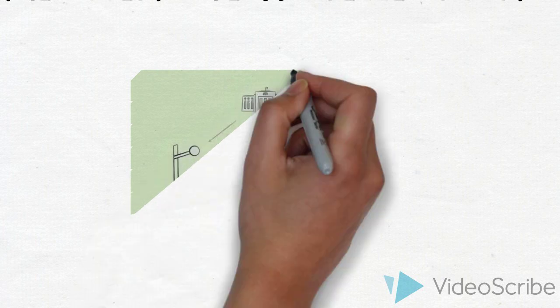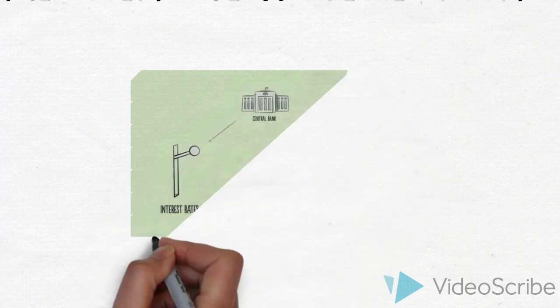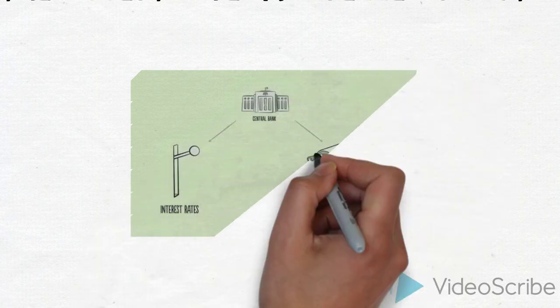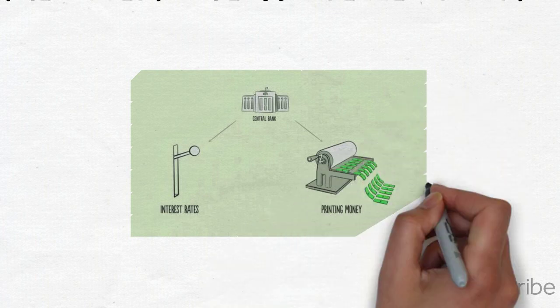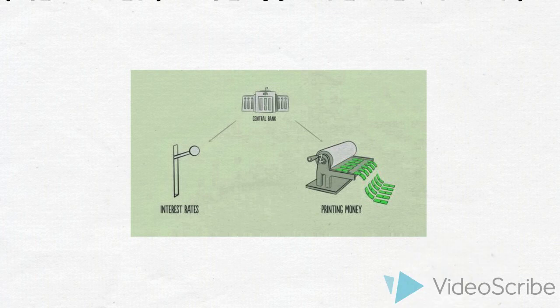And we have central bank which is different from all buyers and sellers because it controls amount of money and credit in economy. It does this by influencing interest rates and printing new money.